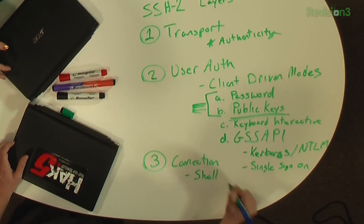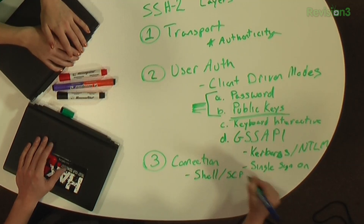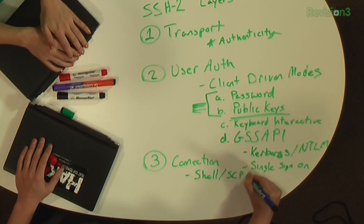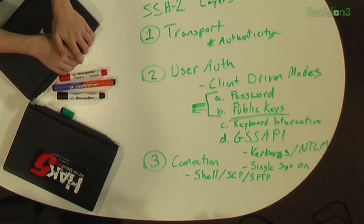The shell channel is what you used in PuTTY initially when connecting — you got an interactive prompt, you connected to Bash as the interpreter. That's the shell, the black box. The shell channel can also be used for SCP file transfer or SFTP.